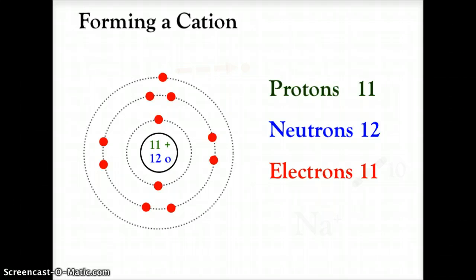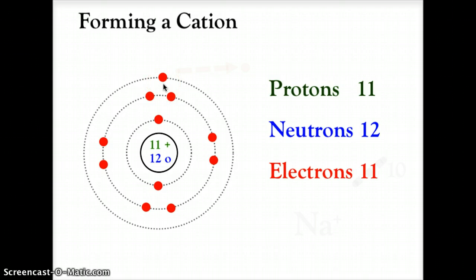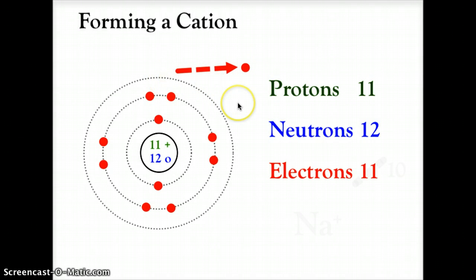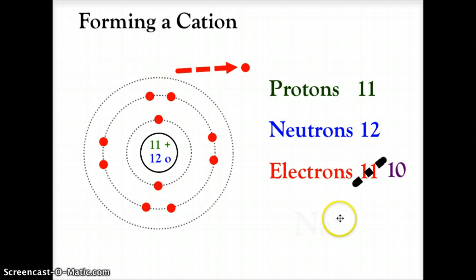Here we have a sodium atom with 11 protons, 12 neutrons, and electrons arranged as 2 in the first shell, 8 in the second shell, and 1 in the third shell — making 11 electrons. Sodium is not stable because it has that extra electron in its outer shell, so it will gladly get rid of that electron. When it does, it has 10 electrons versus 11 protons and becomes a positive +1 cation.